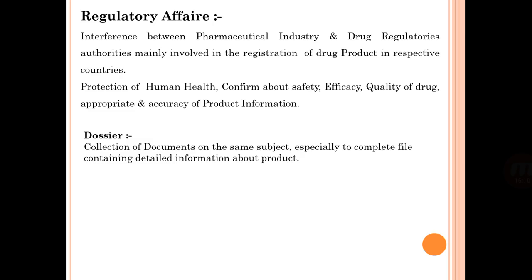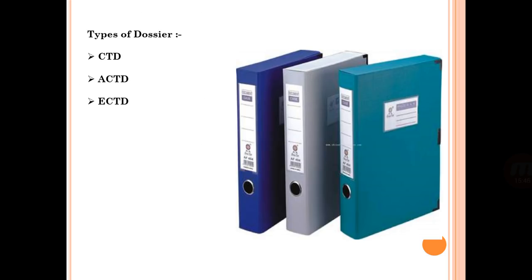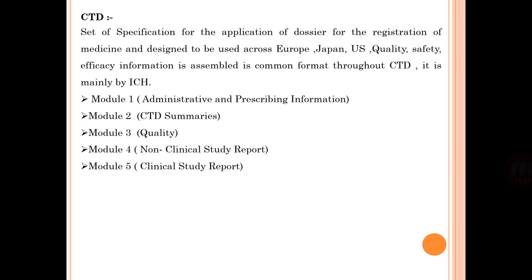Regulatory affairs acts as the interface between the pharmaceutical industry and drug regulatory authorities. It is mainly involved in registration of drug products in respective countries, protection of human health, and confirming safety, efficacy, and quality of drugs. It also handles dossiers — collections of documents containing detailed information about a product. Types of dossiers include CTD (Common Technical Document), ACTD, and ECTD. CTD is a set of specifications for registration of medicines across Europe, Japan, and the US regarding quality, safety, and efficacy, mainly managed by ICH.